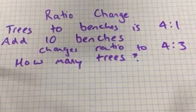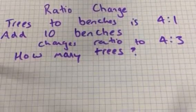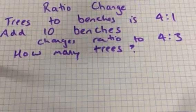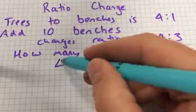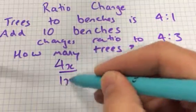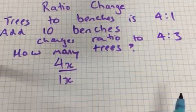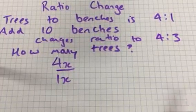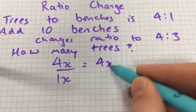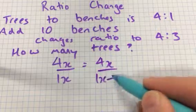My guest presenter is going to talk me through it. What do I do? So try and solve this algebraically. You go into the fraction 4x over 1x. So there are 4x lots of trees to 1x benches. And you know 10 trees are added to this. So that becomes 4x to 1x plus 10.